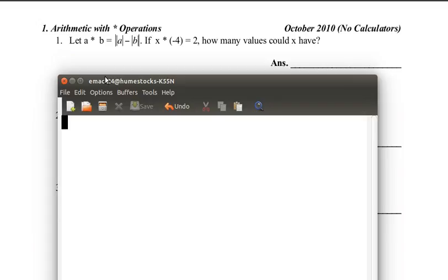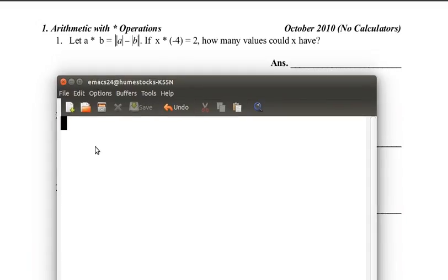Now, before we do anything, because we only have one star operation, I just want to substitute x and negative 4 into the equation so we don't have to deal with any star operations anymore. So first, let's just write out A star x.